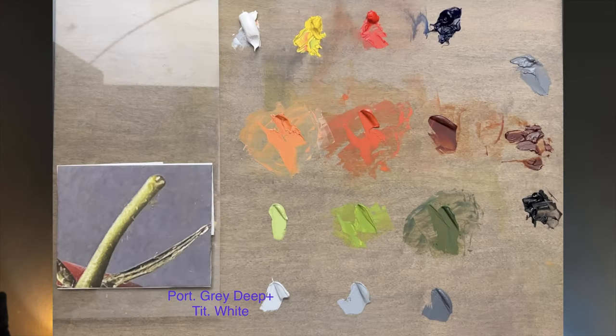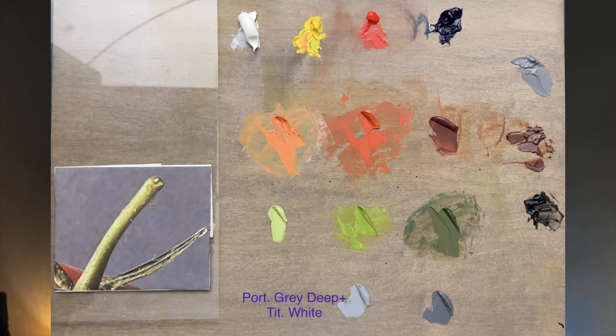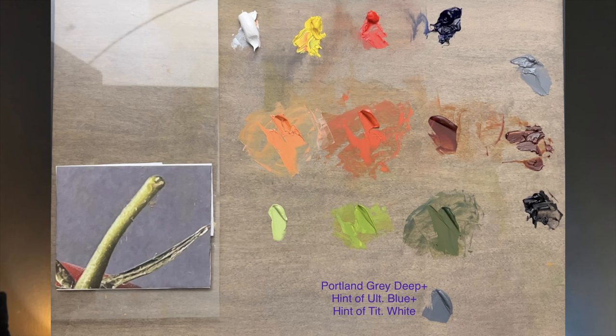I eyeballed the color for the background — the base, the vertical back, and the shadow. I did not care to match exactly; I just made sure I had some separation. The base is essentially titanium white graded with Portland gray. For the vertical back I use titanium white with more Portland gray than before. The shadow is Portland gray with titanium white and a hint of blue — I added that because shadows are typically cooler, and this is the freedom we have as artists.